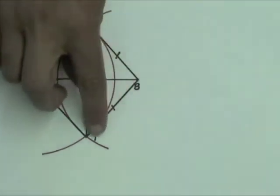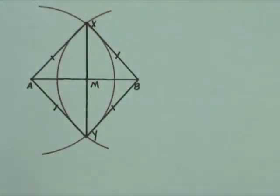AXBY is a quadrilateral with four equal sides. So AXBY is a rhombus.